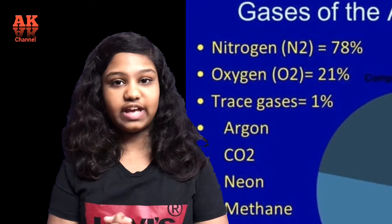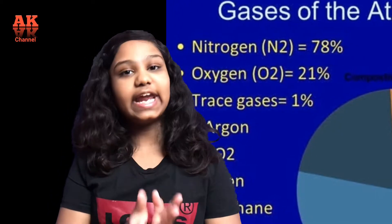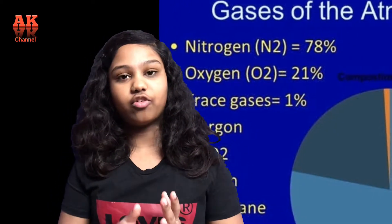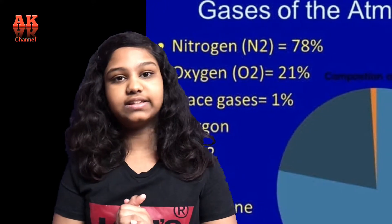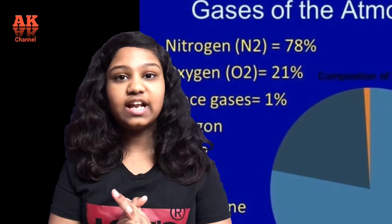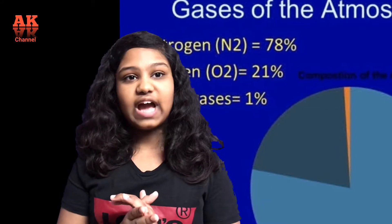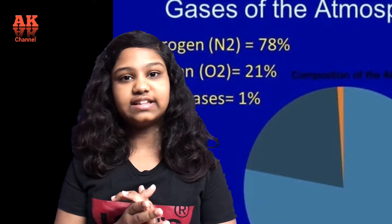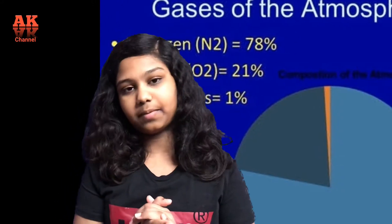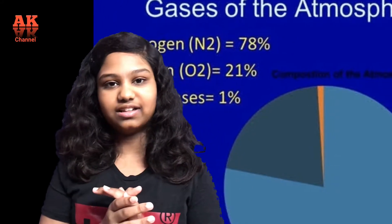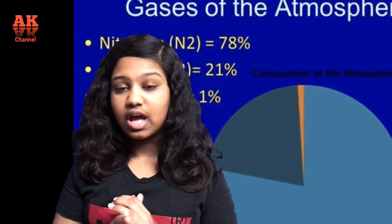Let us first start with a few basics. 71% of the Earth's surface is covered with water and the rest makes up the land. Most of the water is contained in seas and oceans. Speaking of which, let's move on to the oceans.